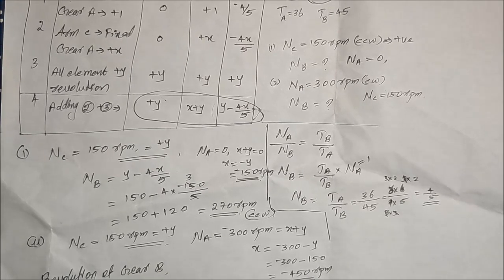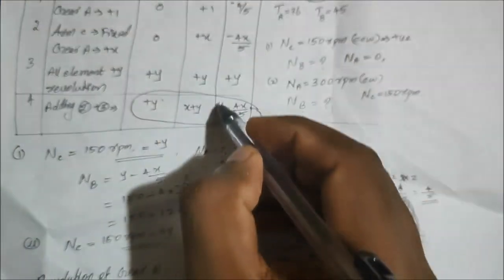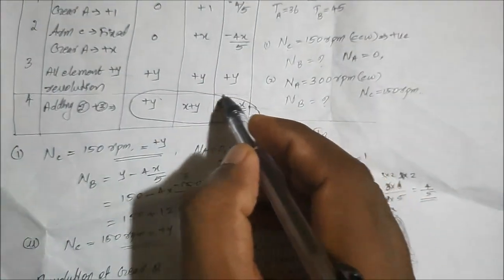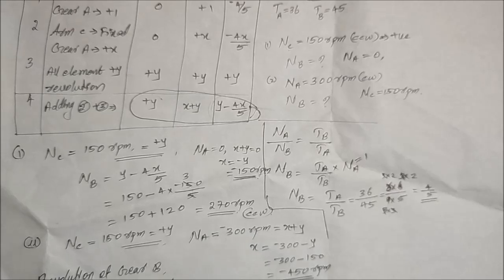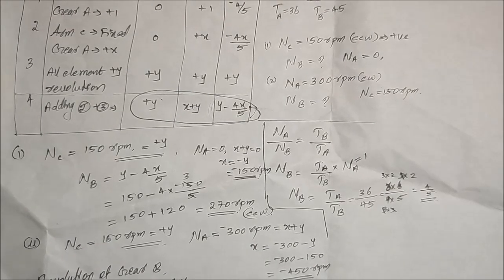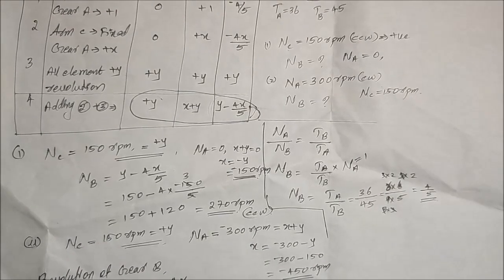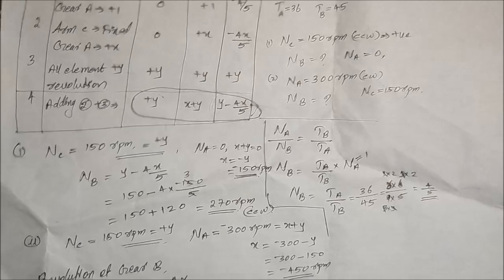Now we find the revolution of gear B. NB equals the tabulation equation: y minus 4x divided by 5. Substituting y equals 150 and x equals minus 450.